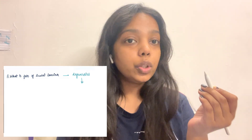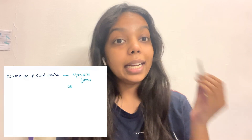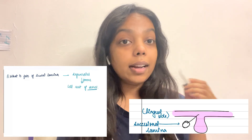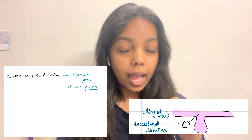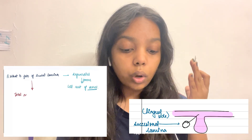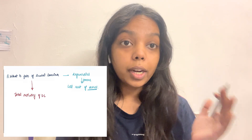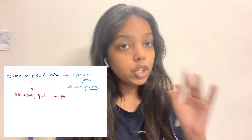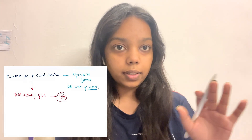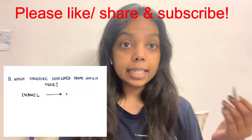What happens to the dental lamina? It degenerates and forms the cell rests of Serres. The total activity period of dental lamina is five years. The next question is: which structure is developed from which tissue?